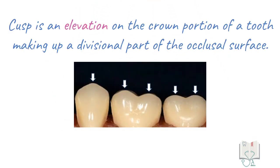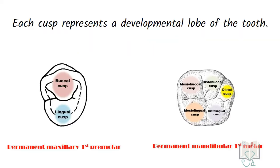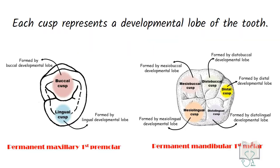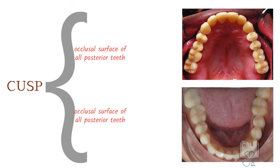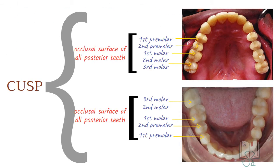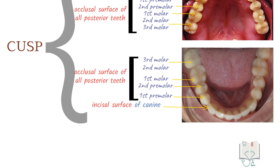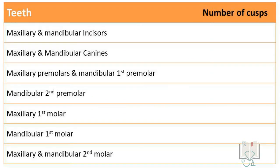Cusp is an elevation on the crown portion of a tooth making up a divisional part of the occlusal surface. Each cusp represents a developmental lobe of the tooth. Cusps are present on the occlusal surface of all molars, premolars, and on the incisal surface of canines.